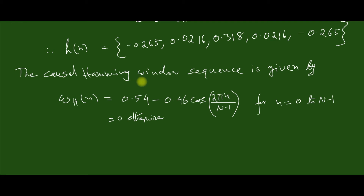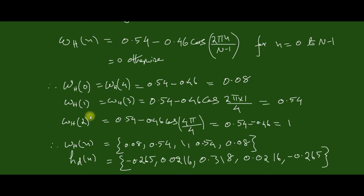The causal Hanning window sequence is given by: w_H(n) = 0.54 − 0.46·cos(2πn/(N−1)), for n equal to 0 to N−1, and 0 otherwise. Computing the Hanning window sequence for N equal to 5, we get w_H(n) equal to 0.54, 1.54, etc. So we now have the Hanning sequence and the desired impulse response.